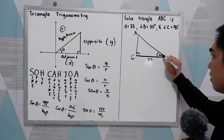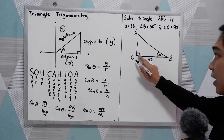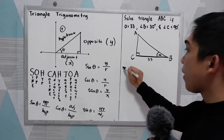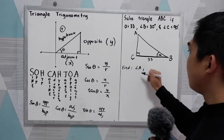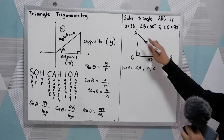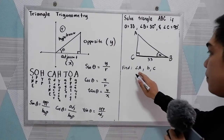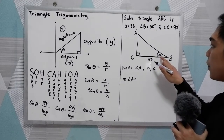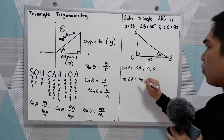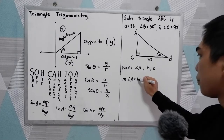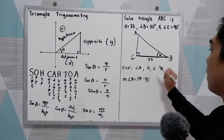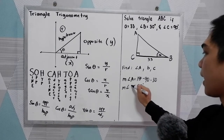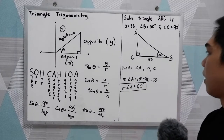To label our right triangle, we have angle C at 90 degrees and angle B at 30 degrees. Since the angles must sum to 180, angle A is equal to 180 minus 90 minus 30, which gives us angle A equal to 60 degrees.